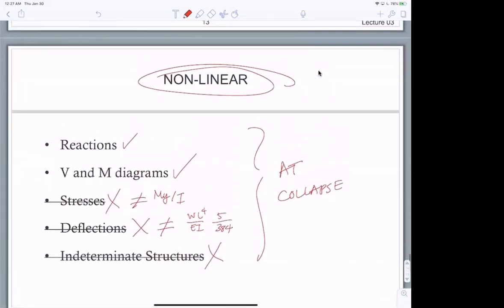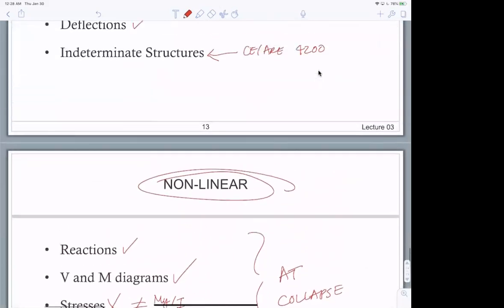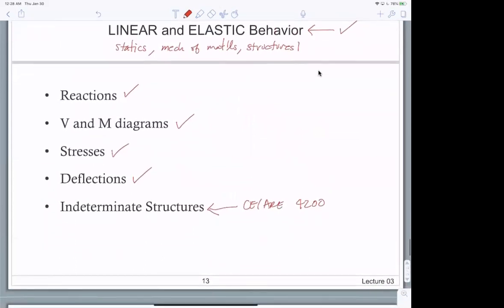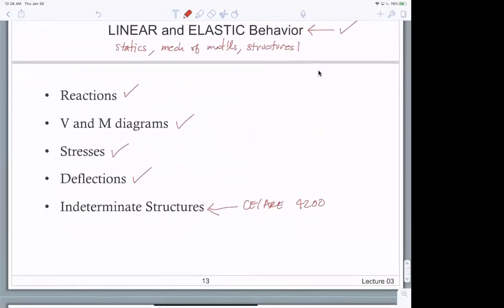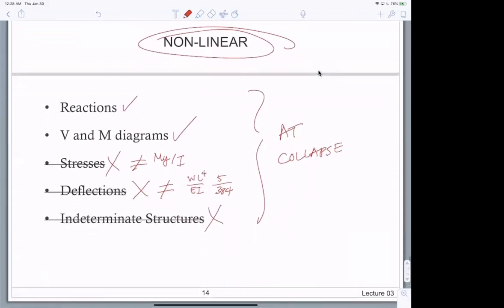So that's the behavior principles, and the key thing is that I want you to know that under small loads, things are linear elastic like what you've learned. But when we get to calculating M_N, the moment strength, or V_N, everything you've learned about stresses, deflections, indeterminate structures are not applicable anymore. It's kind of a bummer, but don't worry. We'll learn how to handle those sorts of things, and we'll continue with the next topic.